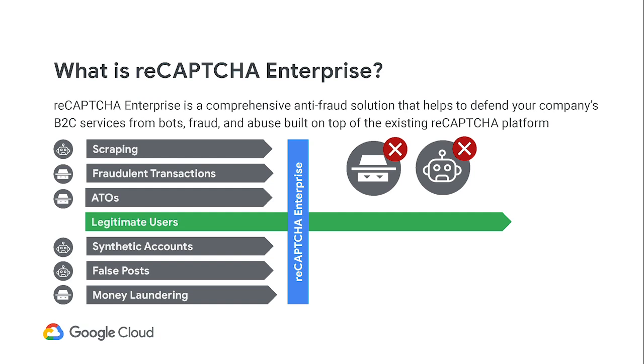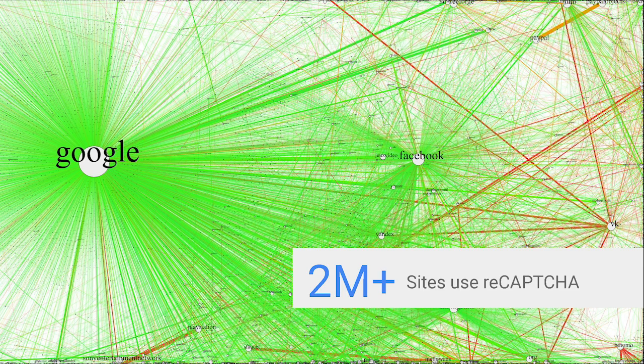How are we able to do that? reCAPTCHA really has an unprecedented level of visibility of abuse across the web from the two million sites that we work with. We're able to combine all these collective collaborative defenses to create a unique view on what legitimate and illegitimate transactions look like across this large population, which enables us to train machine learning models that are able to recognize attacks in their many and evolving forms.